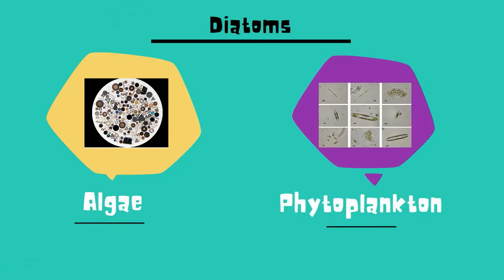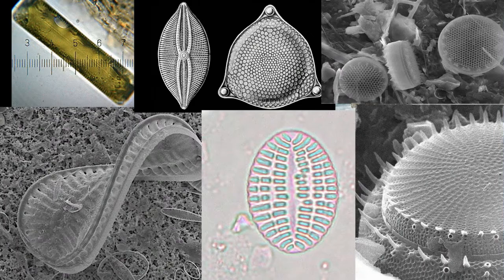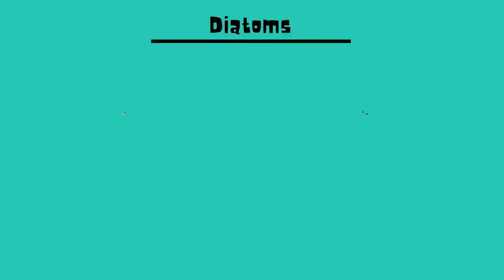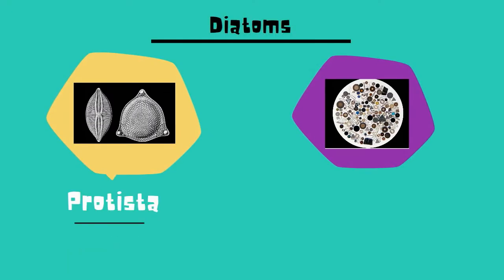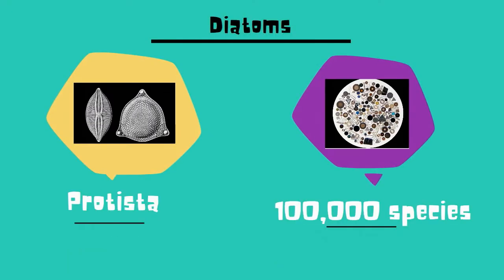Diatoms are unicellular organisms, although they sometimes can be found as colonies. They have cell walls made of glass and are quite beautiful. Diatoms belong to the kingdom Protista and there are over 100,000 species.